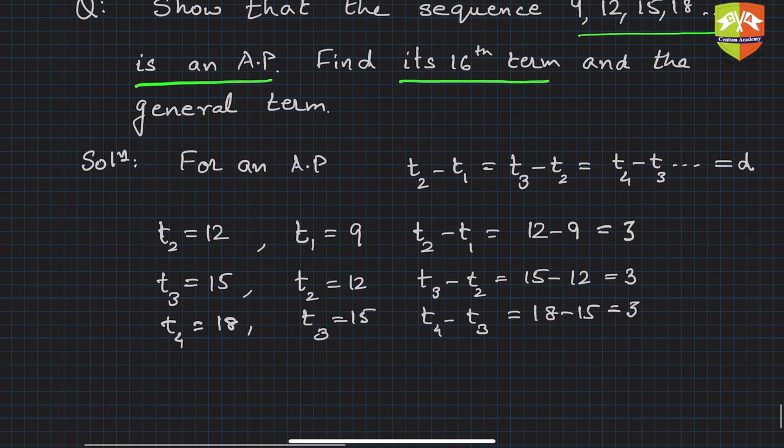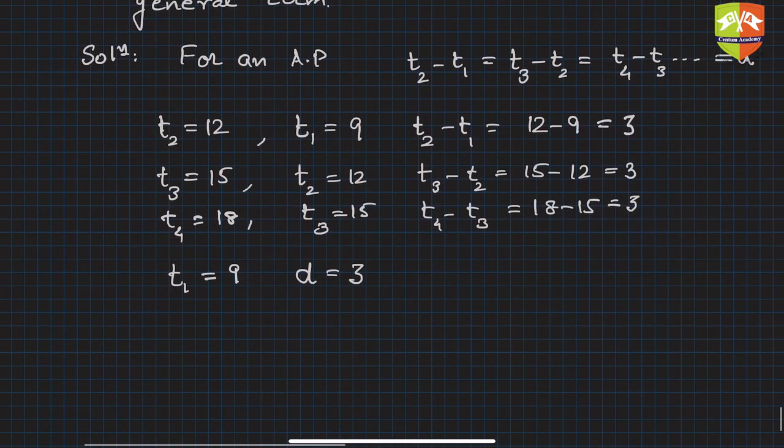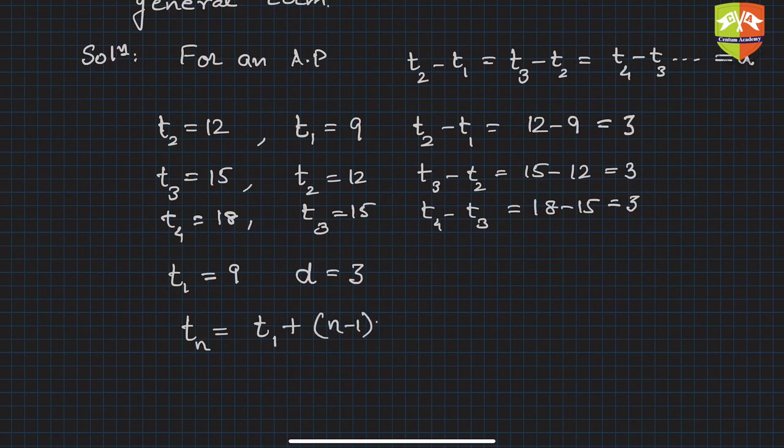Okay, so clearly it is an AP. So what is the first term? First term t1 is given to be equal to 9, and what is d? d is 3. So first let's find out the general term. So tn, the general term, will be first term plus n minus 1 times d, that is 3.